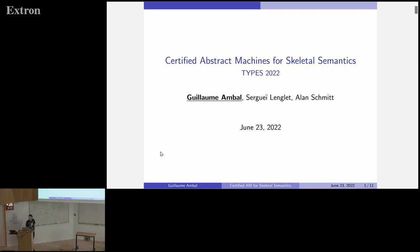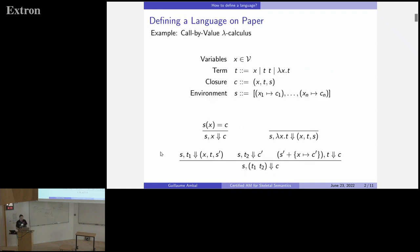This talk is about a framework called skeletal semantics. It's about formalizing programming languages. As an example, we have our old friend Lambda Calculus, here with call-by-value and closures. If you want to define properly this language, it's small enough that you can just grab a piece of paper and write all of this. You can say that we expect variables, and then you say that your terms are variables or application or Lambda abstraction, things like that.